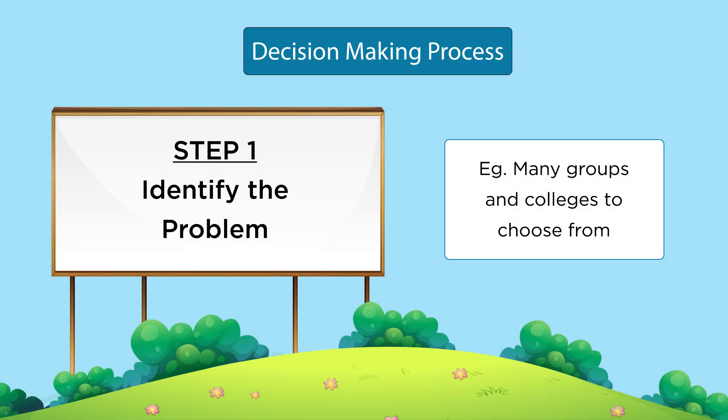This is a case study. Let us see how we can apply the process we learned on a real life situation. Let's understand the steps you must have adopted in arriving at a decision in choosing your particular group. The problem that you had was the number of groups offered in many colleges and you had to choose only one. This is called identifying the problem — the first step.